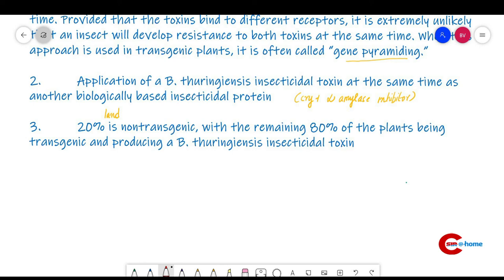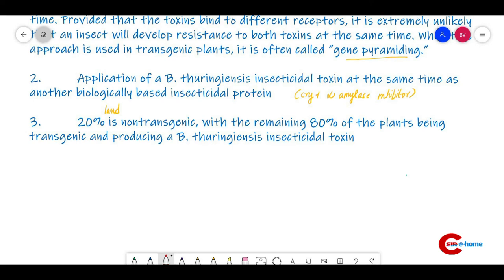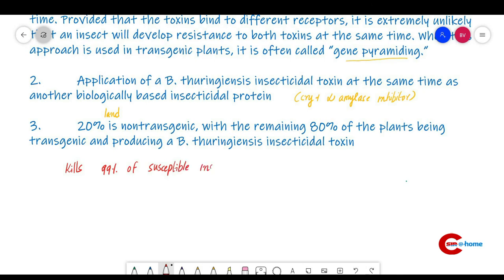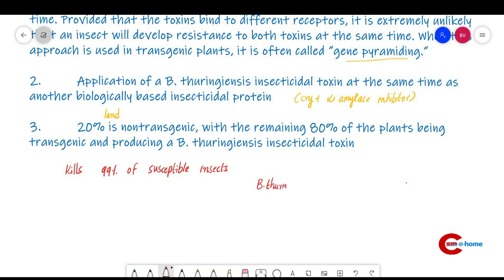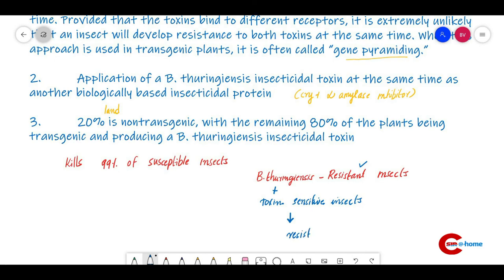Another strategy is to plant 20% of land with a non-transgenic crop and 80% with the transgenic plant. The high dose of toxin kills 99.9% of susceptible insects. The Bt-resistant insects — about 1% — then mate with toxin-sensitive insects from the non-transgenic group, so the resistance gene is effectively diluted and resistance does not accumulate in the population.